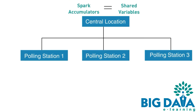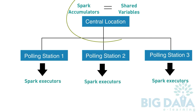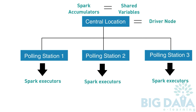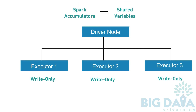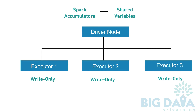Spark accumulators are shared variables that can aggregate values across multiple tasks in a Spark cluster. In our vote counting analogy, the individual polling stations are the Spark executors. The central station where the votes are accumulated is the driver node of the Spark cluster. Just like how the votes in individual polling stations are incremented, the accumulator values are write-only for the individual executors. Like how the votes from individual polling stations are read-only in the central location, the accumulator values are read-only for the driver.